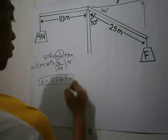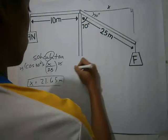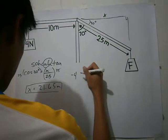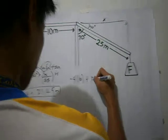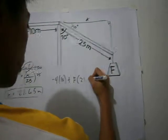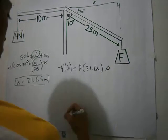We will now add all components. Negative 4 times 10 plus F times 21.65 equals 0.